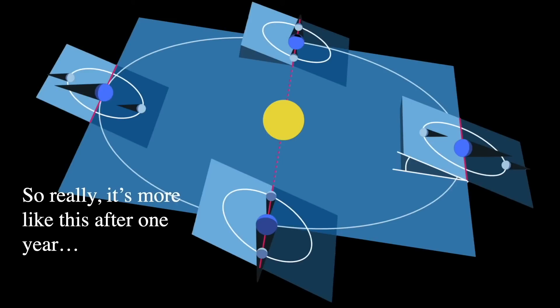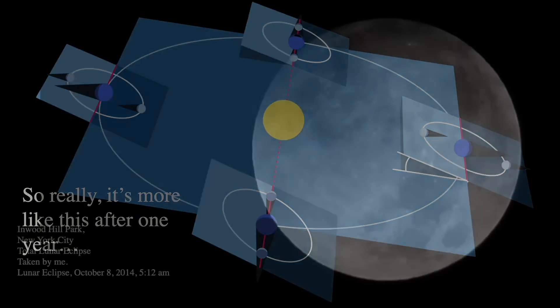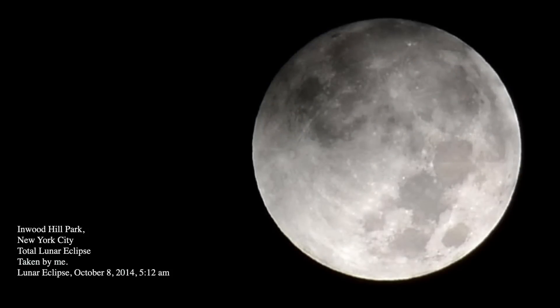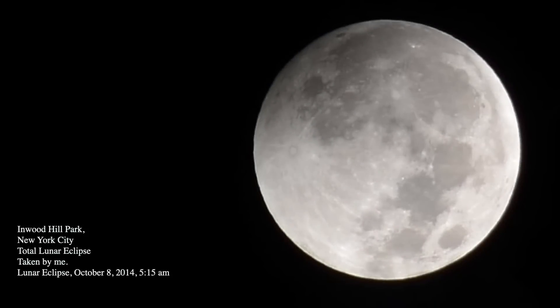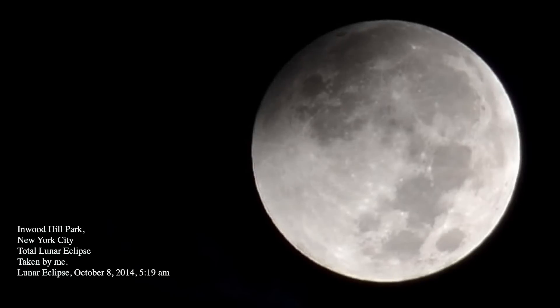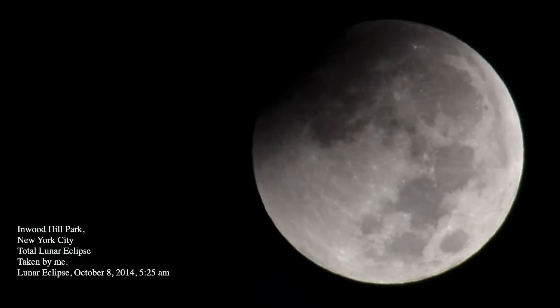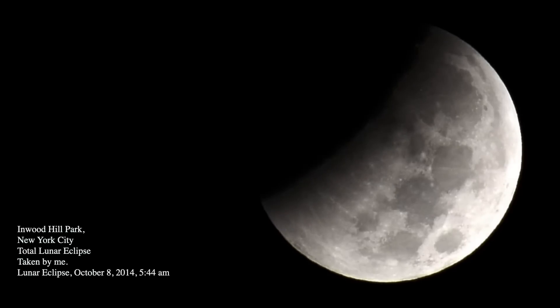That's a bit about lunar eclipses. And I'd like to show you some wonderful pictures that I took. The first one is, this is a series of photos from Inwood Hill Park in New York City. This was a total lunar eclipse. I took these pictures on October 8th of 2014 at about 5 o'clock in the morning.